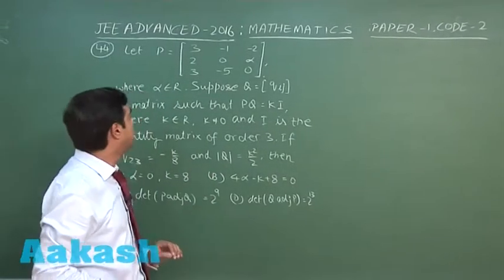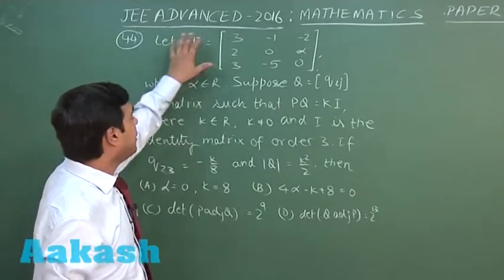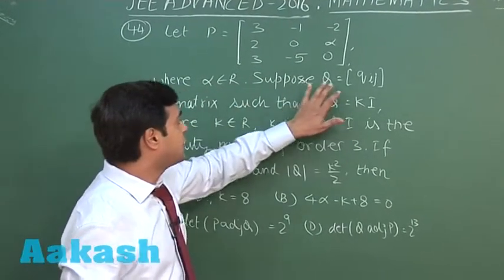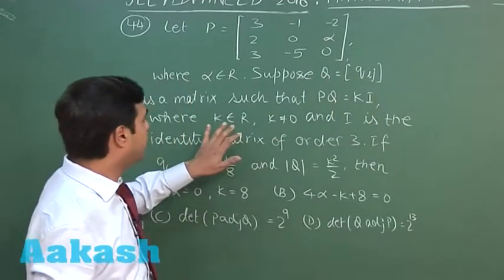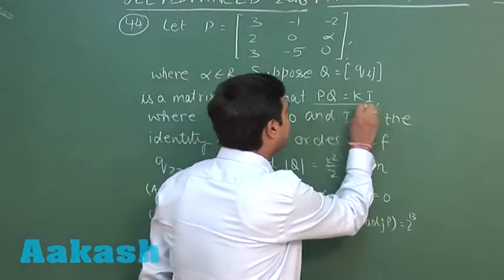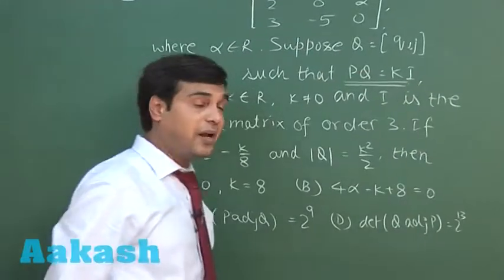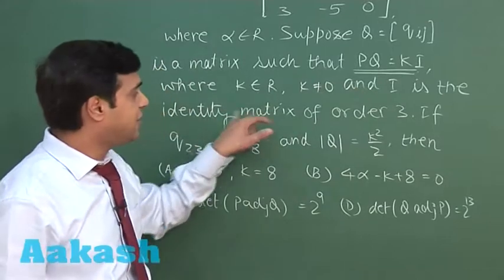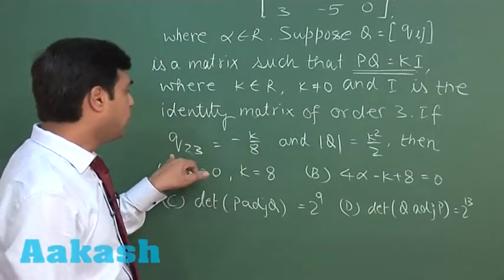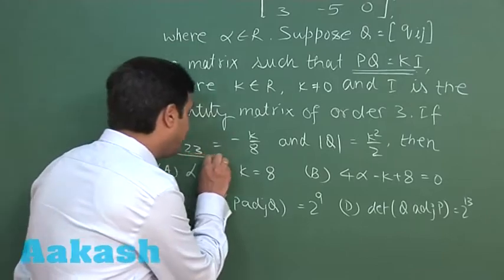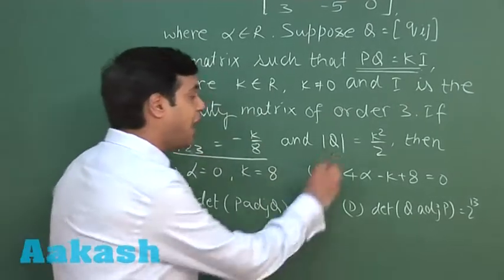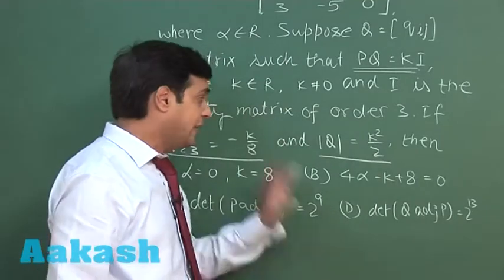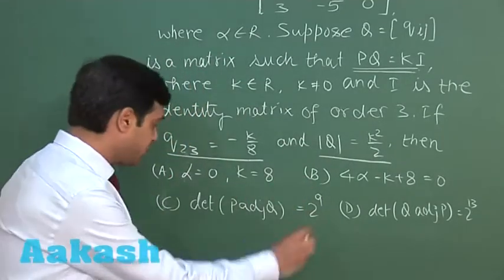Let's talk about question number 44. Let P be a 3×3 matrix where alpha is any real number. Suppose Q is another matrix such that PQ equals kI, where k is a non-zero real number and I is the identity matrix of order 3. If Q₂₃ is given as -k/8 and determinant of Q equals k²/2, then four options are mentioned — let's start.